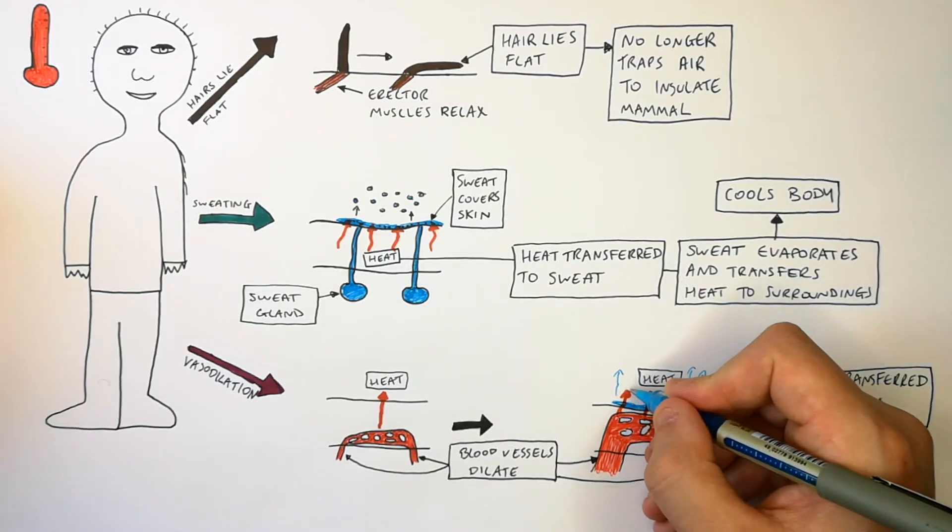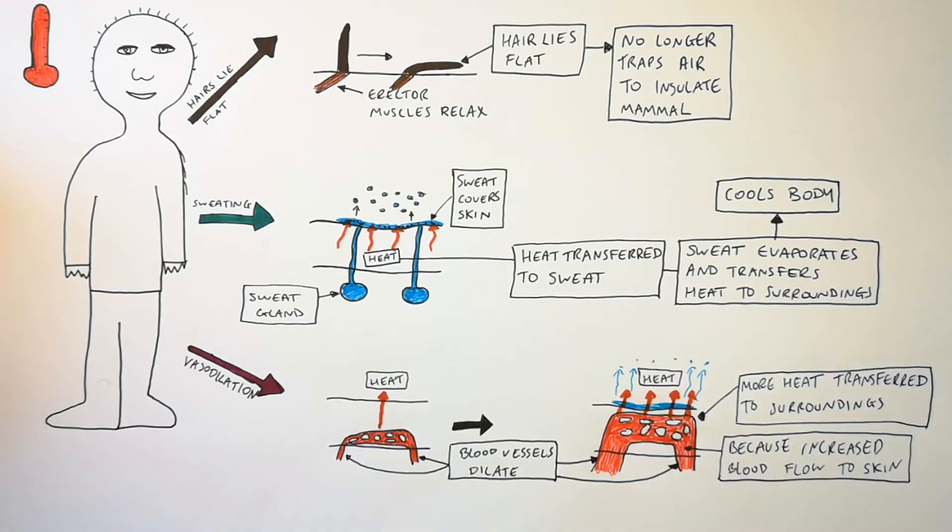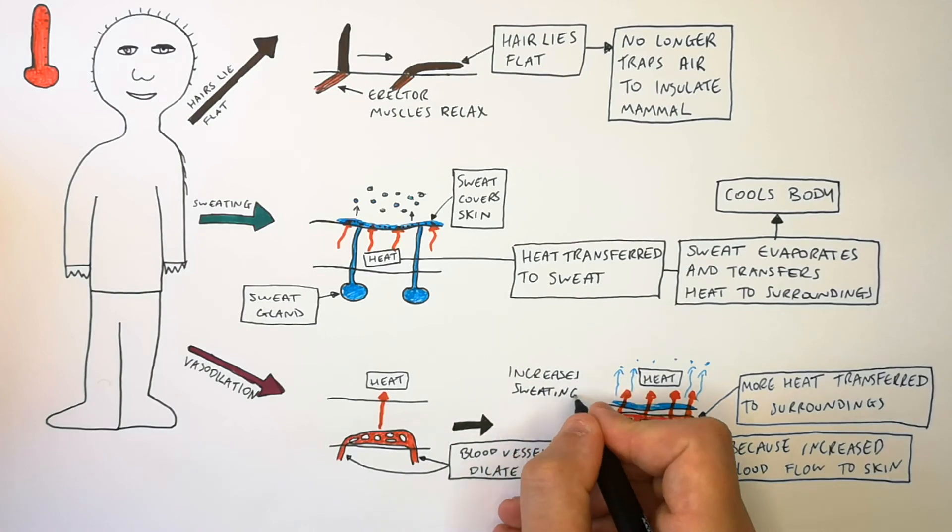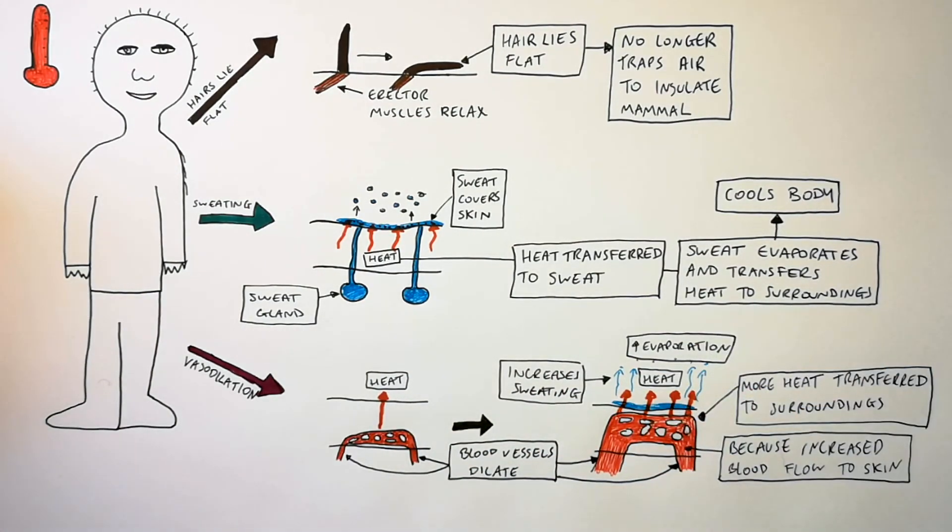So there's an increased heat transfer into the sweat which will lead to an increased rate of evaporation of sweat. That will increase how quickly we can cool down. So it's really important that we sweat to cool down. So if there's an increased sweating that could lead to an increased rate of evaporation. That will lead to our body cooling down more quickly.